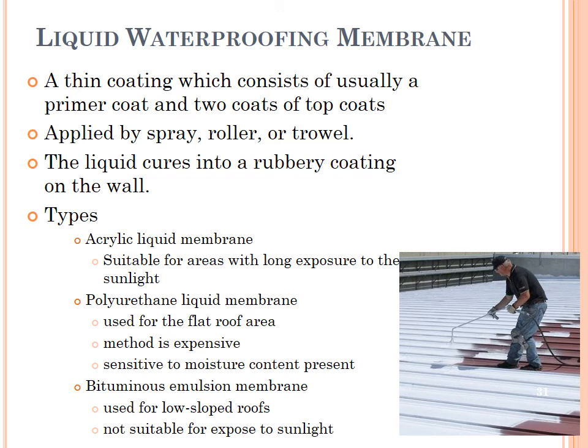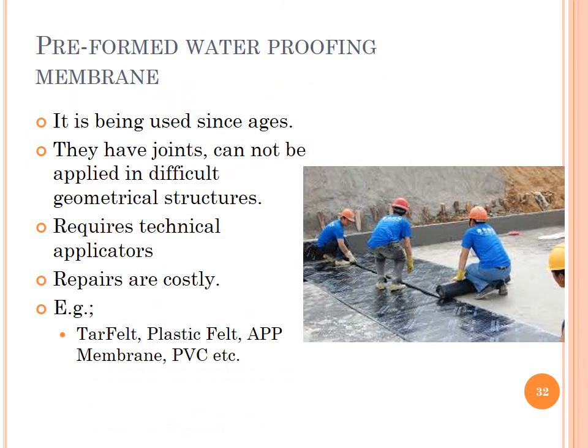Types of liquid membrane include acrylic liquid membrane, which is suitable for areas with long exposure to sunlight; polyurethane liquid membrane, used for flat roof areas — this method is expensive and sensitive to moisture content; and bituminous emulsion membrane, used for low-sloped roofs and not suitable for exposure to sunlight. Preformed waterproofing membrane has been used since ages; it has joints and cannot be applied in difficult geometrical structures, requires technical applicators, and repairs are costly. Examples include tar felt, plastic felt, APP membrane, PVC etc.